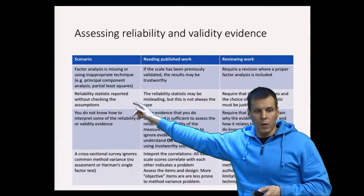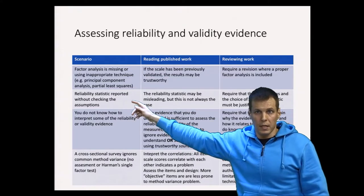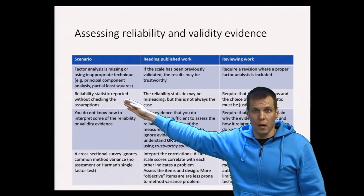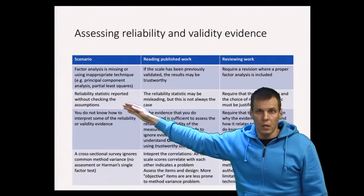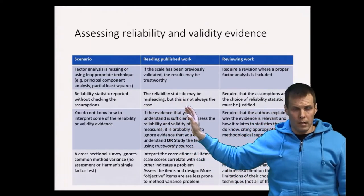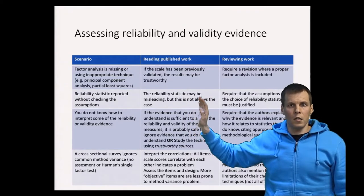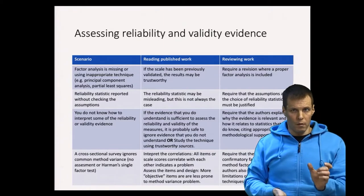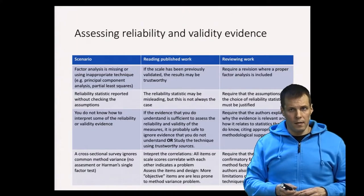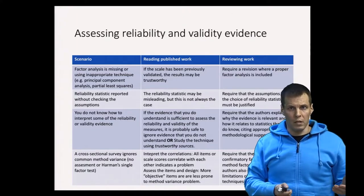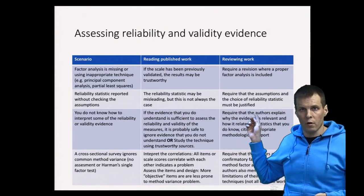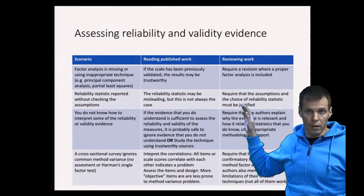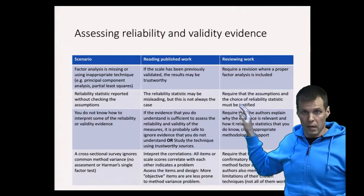Another scenario is a reliability statistic reported without checking the assumptions — the default case being the use of coefficient alpha without knowing what its assumptions are. If you are reading published work, it is useful to know that even if assumptions are not fully met, the results may not be severely affected, so you can probably trust the results. If you are reviewing someone's work for publication, require that the authors justify the chosen reliability coefficient and report how the assumptions were checked.